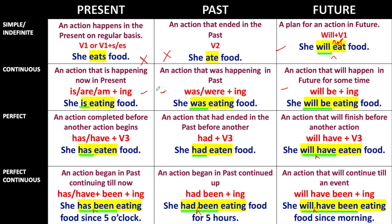Children get confused making negative sentences in present indefinite and past indefinite because the helping verb is not given. 'She eats food,' 'she ate food' — 'ate' and 'eat' are main verbs. When any verb is left alone in a sentence it becomes a main verb. In these two tenses we need to take the help of helping verbs: 'do' and 'does' for present indefinite, and 'did' for past indefinite.